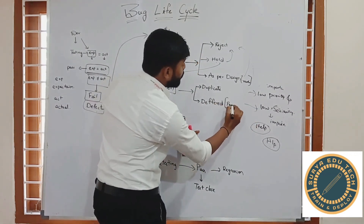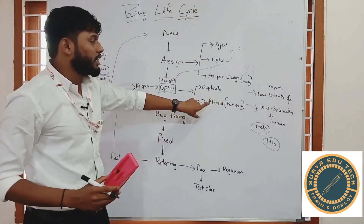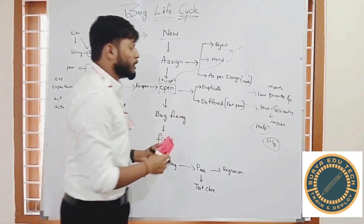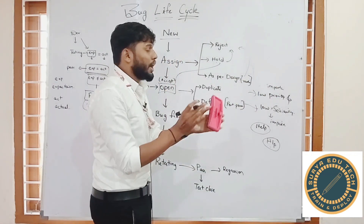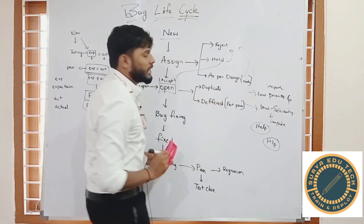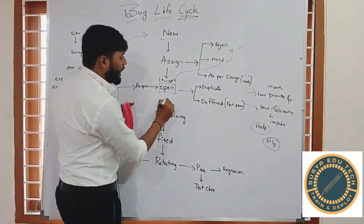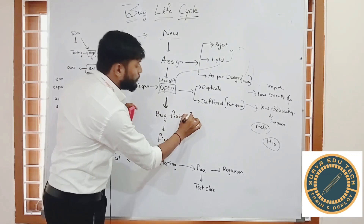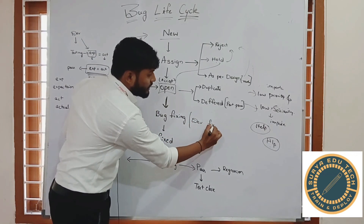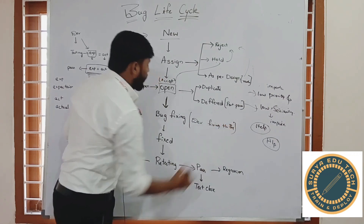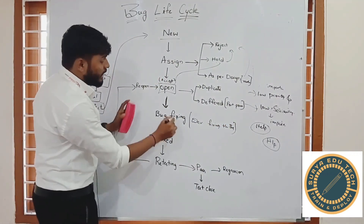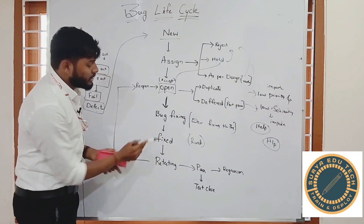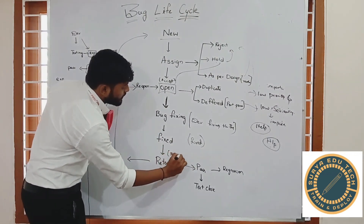Deferred means postponed. The developer tells the testing team: 'I am deferring this defect because it is low priority and low severity — I have more critical bugs to fix first.' So the status is set as 'Deferred'. But if the defect is high priority and high severity, confirmed, and not a duplicate, the developer follows the bug-fixing stage. The developer fixes the bug and gives it the status of 'Fixed'. Then the fixed build is sent to the testing team.